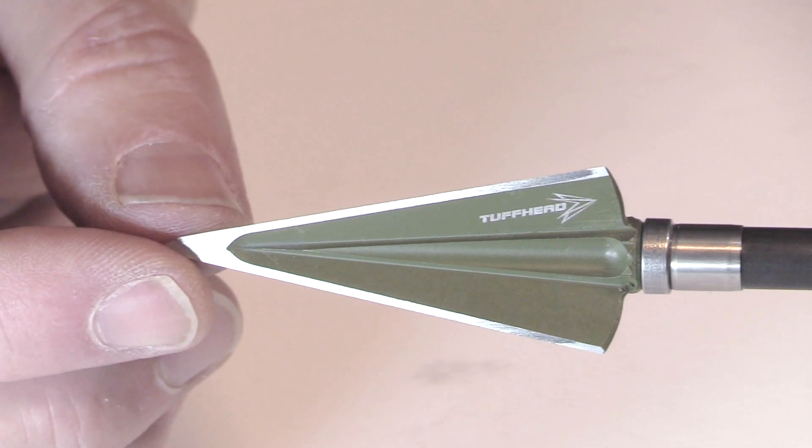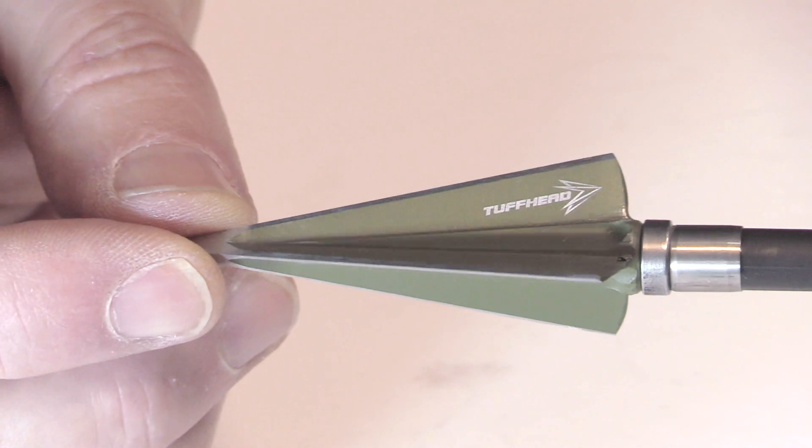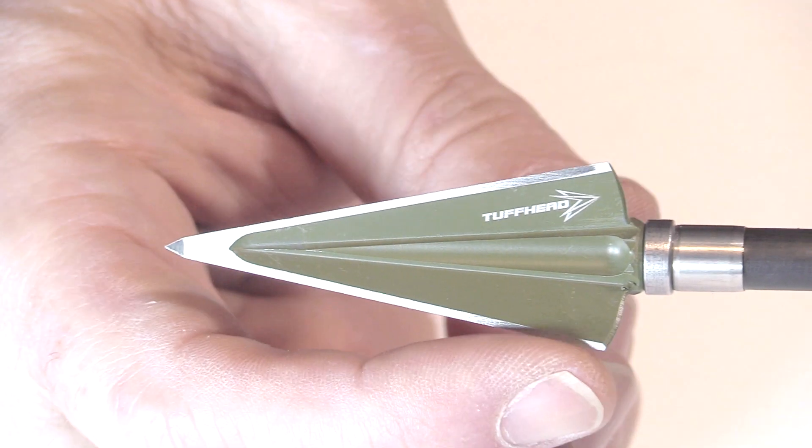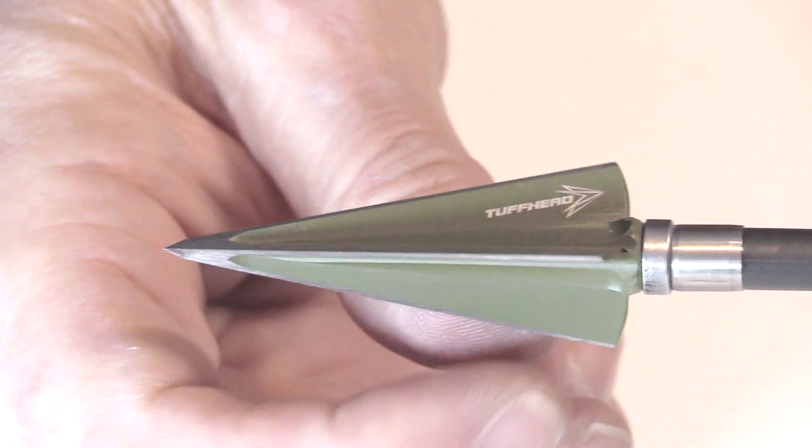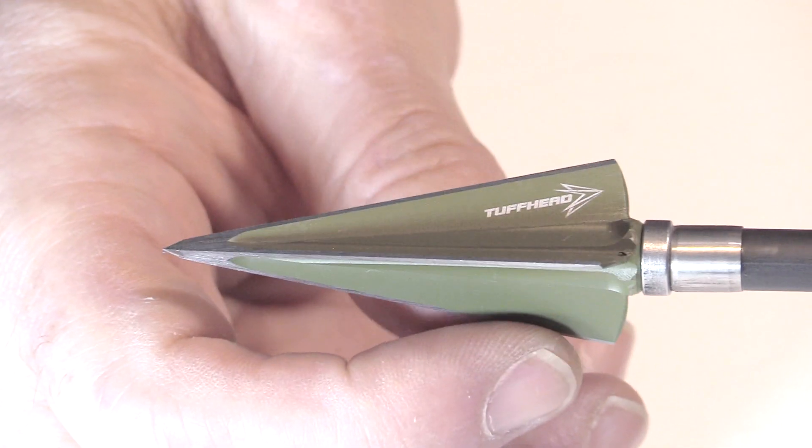Now, this is the 200-grain model. There's also a 300-grain model. The cutting diameter is one inch. So that's relatively small. A one-inch cut. It's not going to be a very big hole.